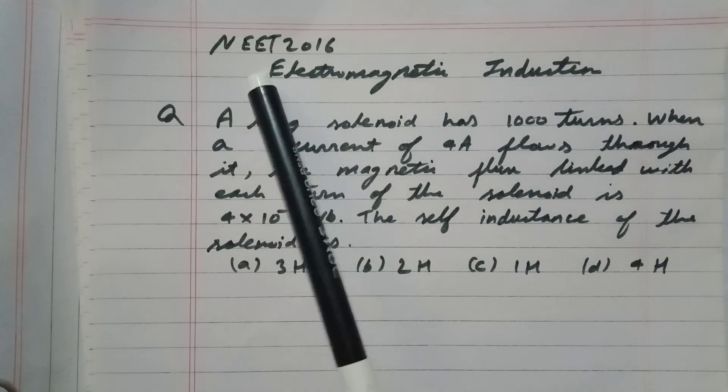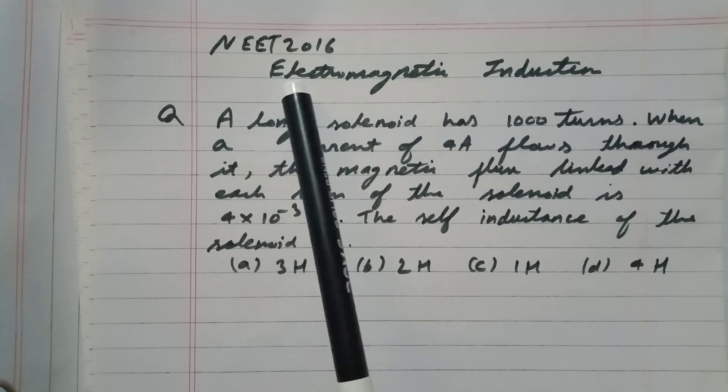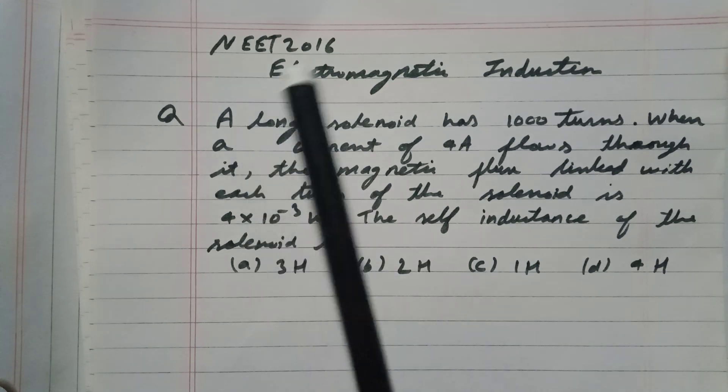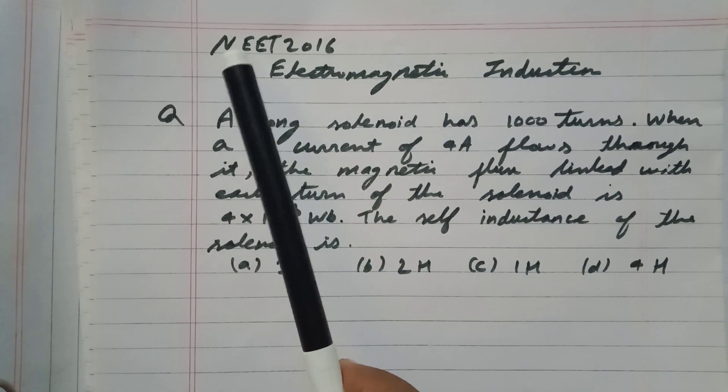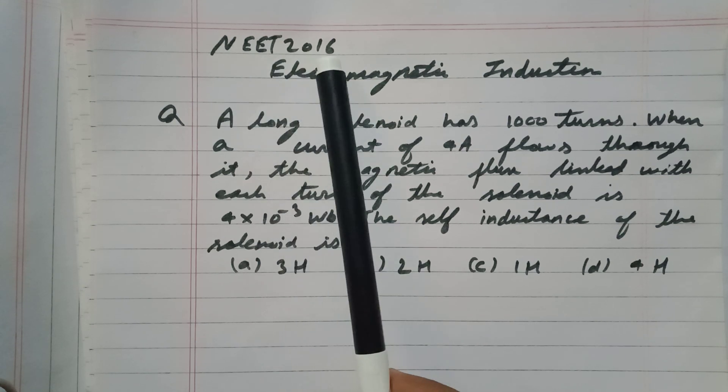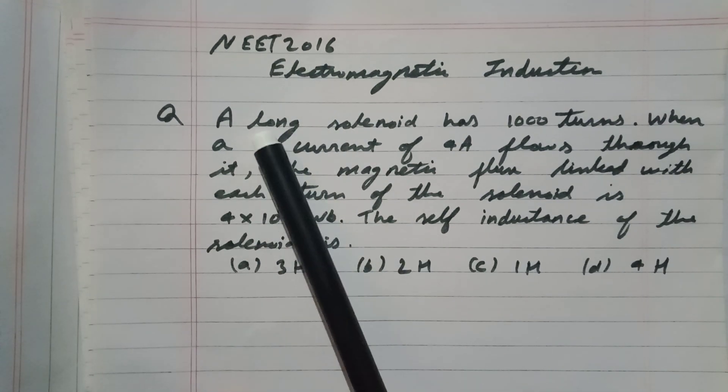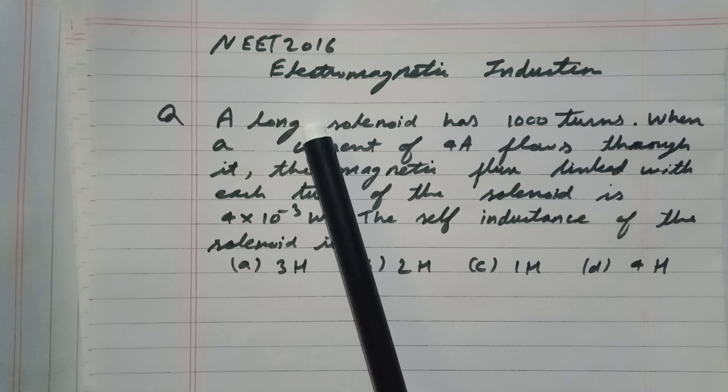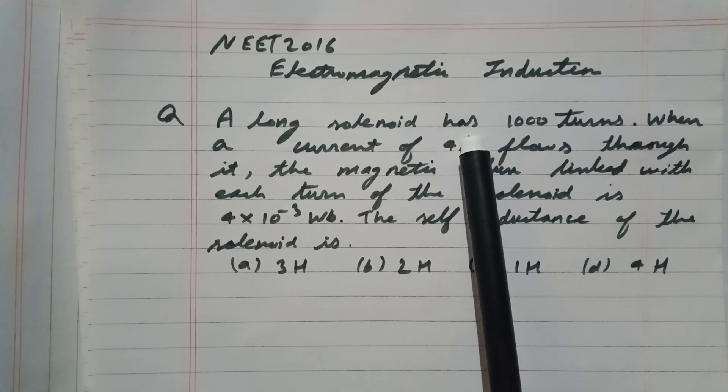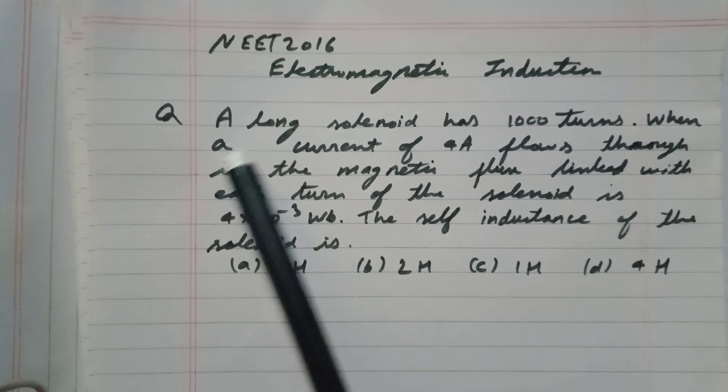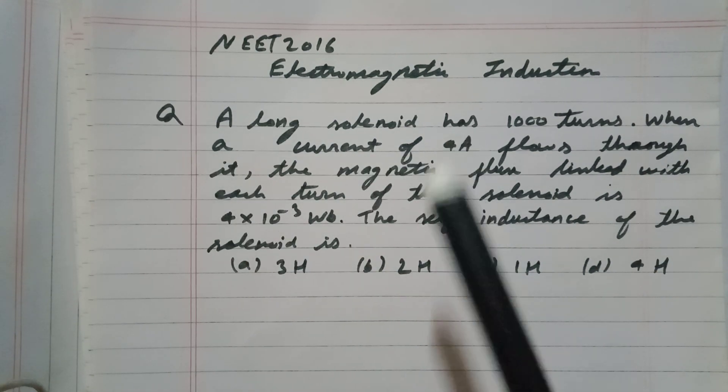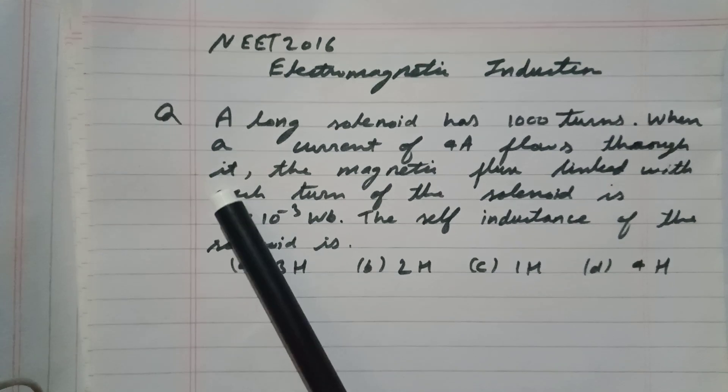Hi, I have a topic: electromagnetic induction. I have a question from the topic electromagnetic induction which is in the NEET 2016 paper. The question is: A long solenoid has 1000 turns. When a current of 4 ampere flows through it...